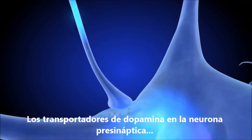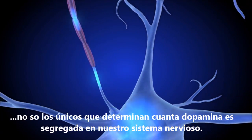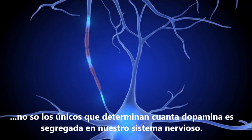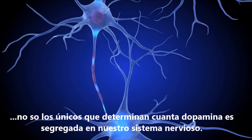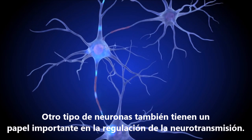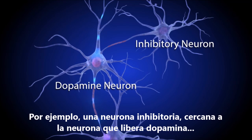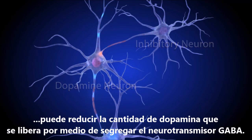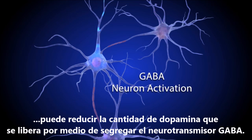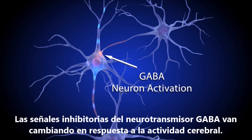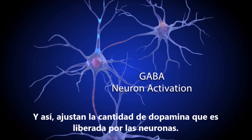Dopamine transporters in the presynaptic neuron are not the only things that control how much dopamine is released or how often. Other nearby neurons also play important roles in regulating neural signals. For example, an inhibitory neuron near the dopamine presynaptic cell can reduce the amount of dopamine delivered to the synapse by releasing the neurotransmitter GABA. Inhibitory GABA signals change in response to local brain activity, adjusting the amount of dopamine released by stimulated dopamine neurons.